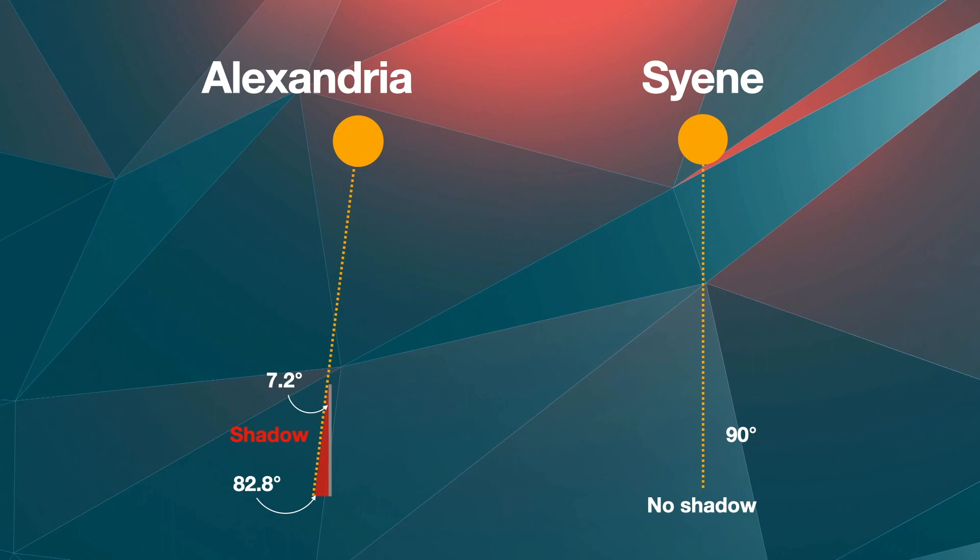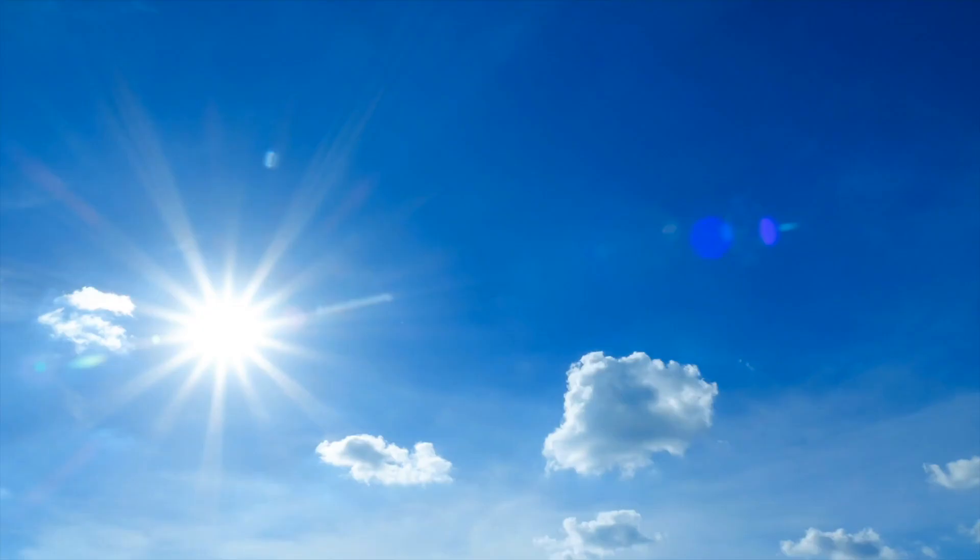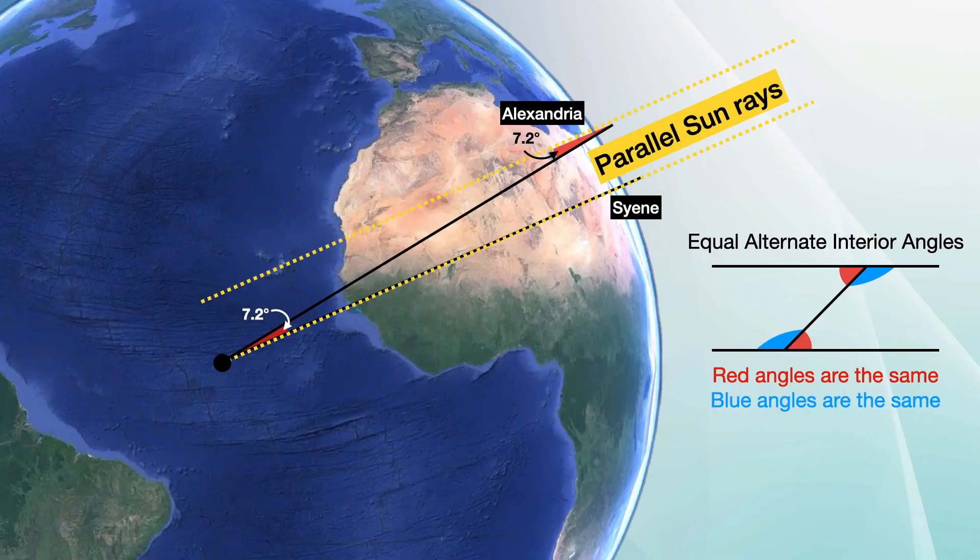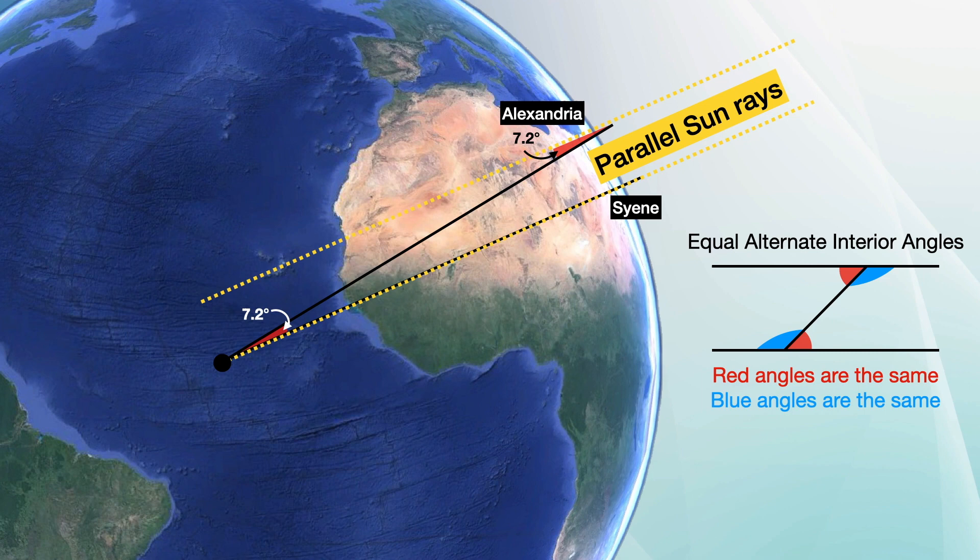He also assumed the sun to be far away from earth, meaning its rays would be parallel when they reach earth. Combining the parallel sun rays and the 7.2 degree shadows in Alexandria, Eratosthenes calculated that Alexandria is 7.2 degrees north of Syene.